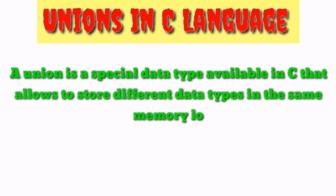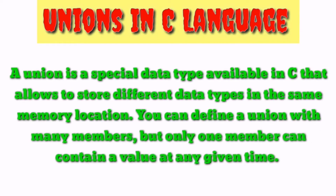Hi everyone, welcome to C language tutorial. This is a video about unions in C language. A union is a special data type available in C that allows storing different data types in the same memory location. You can define a union with many members.